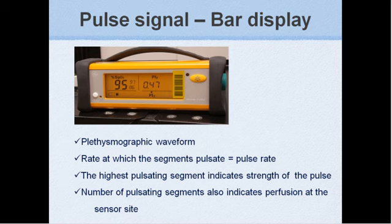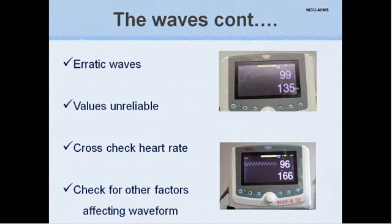If the bar display is less than 50 percent, it indicates poor quality signals. If the waves are not uniform, the values displayed are likely to be erroneous. A practical approach to the problem is to cross-check the heart rate of the baby with the displayed value. They should match within 10 percent of each other. The causes of non-uniform waves could be many as discussed further, and they should be corrected before attributing any significance to the displayed values.